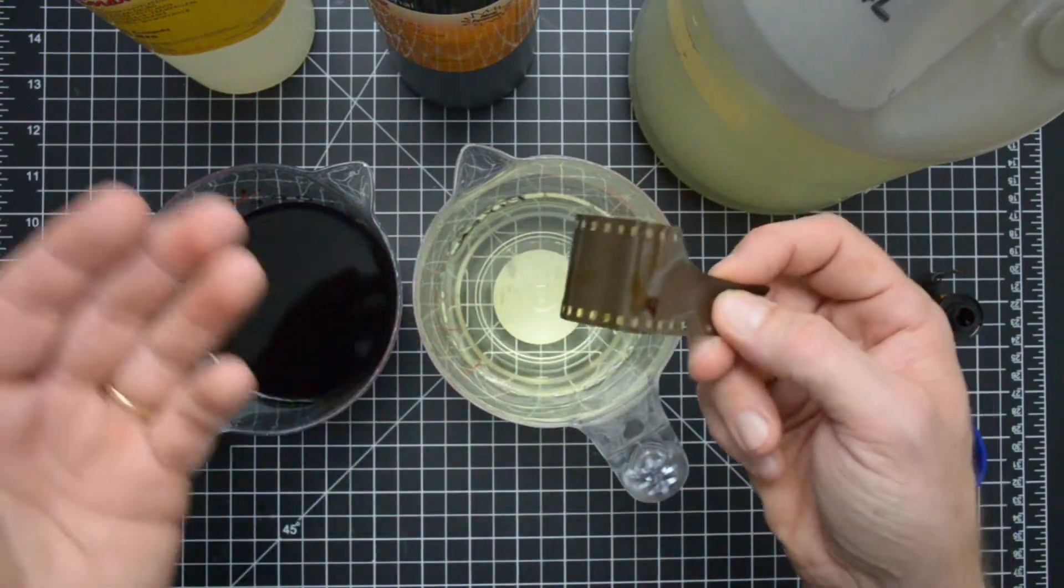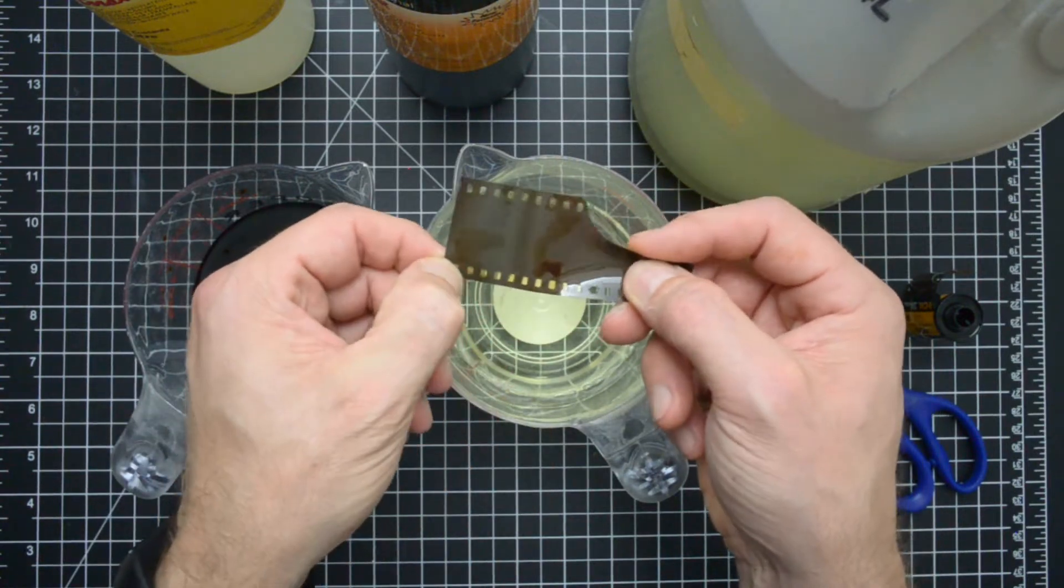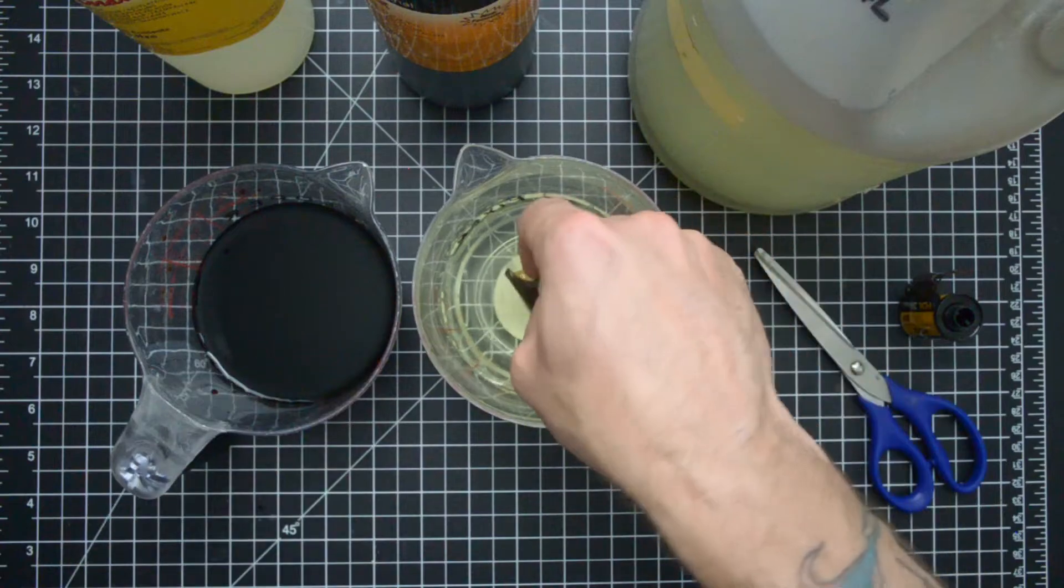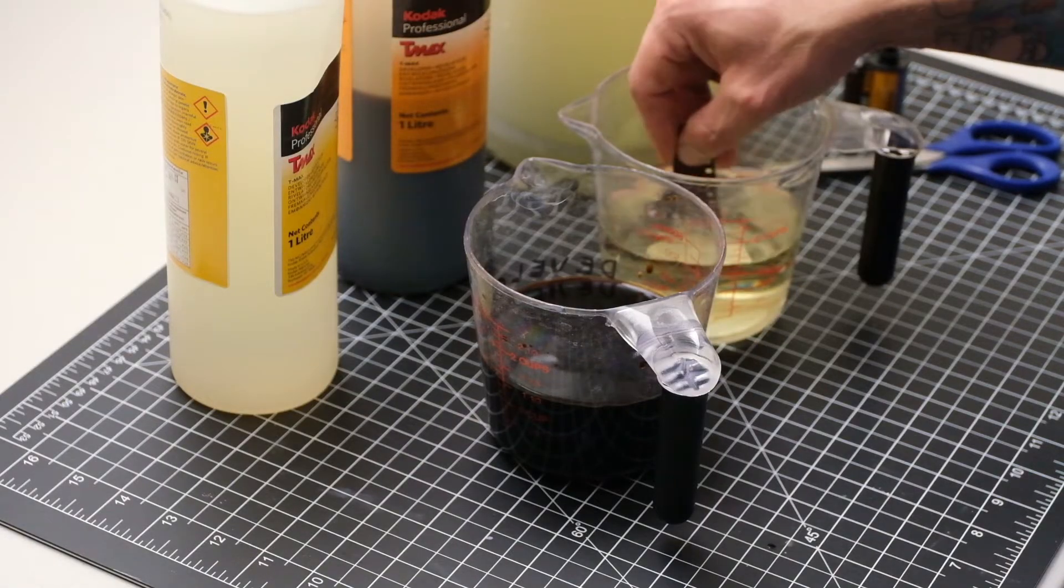What we're looking for in the fixer is basically this is going to go from an opaque looking snippet to something that's a little more clear. Just like we did with the developer, just put it in and swish it around a little bit.